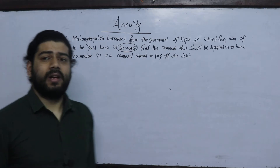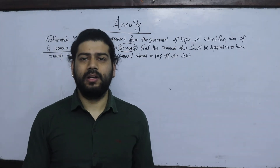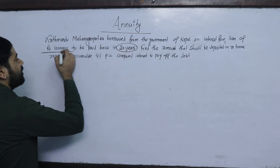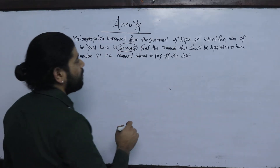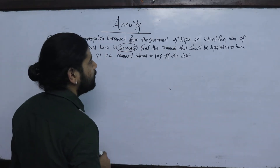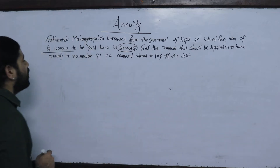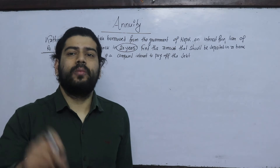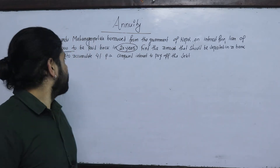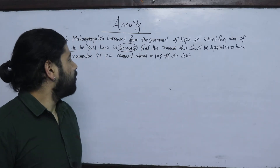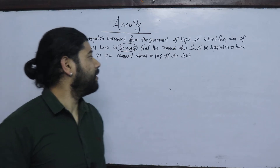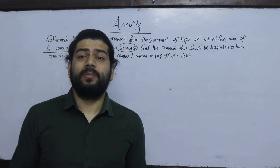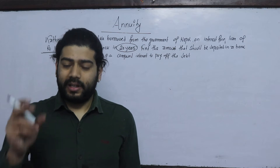After a certain time, what is the amount of money? Find the amount that should be deposited in a bank annually. For the bank, Rs. 3 lakh to be paid back — at 4% per annum compound interest — to pay the debt. The debt is paid back in equal installments.